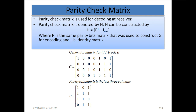The parity check matrix is denoted by H. H can be constructed as H equals the transpose of the parity bit matrix P concatenated with an identity matrix of size (n-k), where P is the same parity bits matrix that was used to construct G for encoding, and I is the identity matrix.